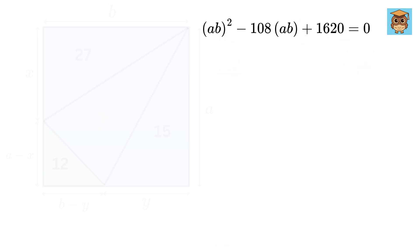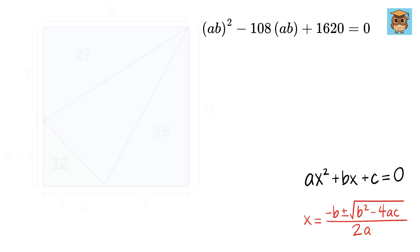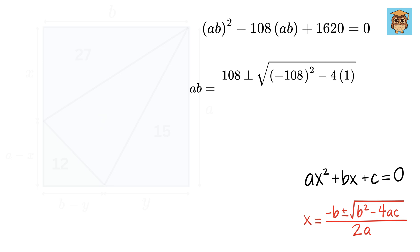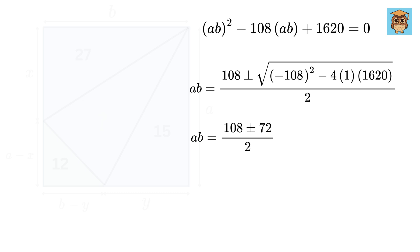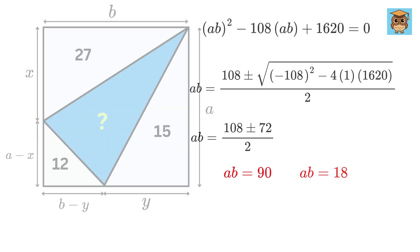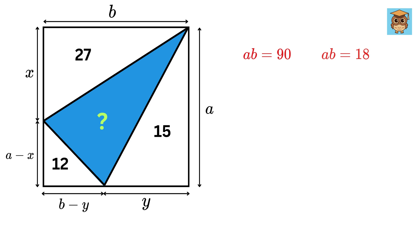This is a quadratic equation, so we use the quadratic formula. Treating ab as the variable, ab equals (108 plus or minus the square root of 108 squared minus 4 times 1620) all divided by 2. This gives us 108 plus or minus 72 over 2, so ab equals 90 or 18. Here comes the magic: ab represents the area of the rectangle. ab cannot be 18 because the triangle inside the rectangle alone has area 27, which is already greater than 18. So ab equals 90.